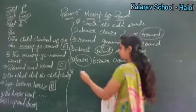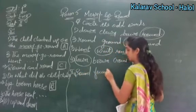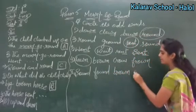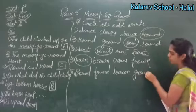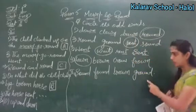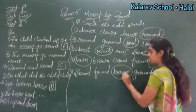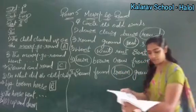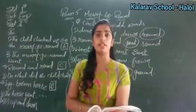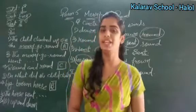Now the last, fifth number. The words are: sound, found, brown, and ground. Sound, found, and ground all end with '-ound' and their pronunciation is the same. So 'brown' is the odd word. We have completed up till 'circle the odd word' on page 76. We will meet in the next lecture. Bye bye, thank you.